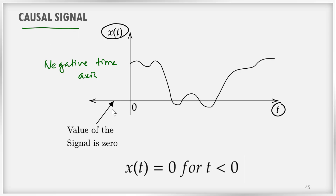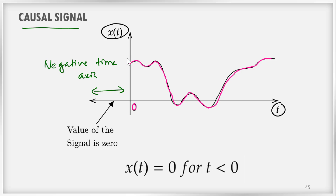That means the value of the signal is 0 in the negative time axis. For example, we were waiting for a signal and at 12 o'clock the signal started, so we can assign 0 to that instant. From that point the signal exists and will continue for some finite time or maybe to infinity. We are sure the signal does not exist before time t=0. This 0 is assigned arbitrarily — we can take any time instant as 0. Generally most practical signals are of this type; the time at which the signal starts is assigned t=0.